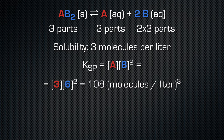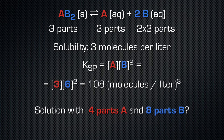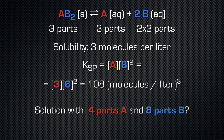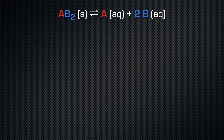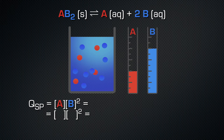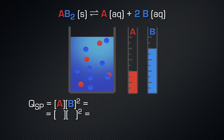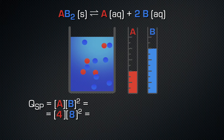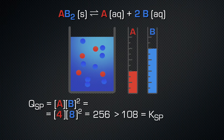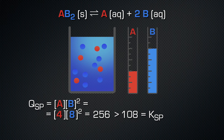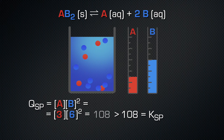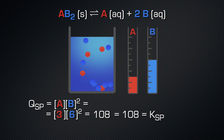The solubility product is 3 × 6² = 108. What happens when we prepare a solution of 4 particles A and 8 particles B? We can calculate the reaction quotient, which has the same formula as the solubility product but does not necessarily indicate an equilibrium state. With 4 particles A and 8 particles B, the reaction quotient is 256 — much higher than the solubility product. The solubility of AB₂ is exceeded, so one particle AB₂ precipitates. We are left with 3 particles A and 6 particles B, and the reaction quotient drops to 108, which is equal to the solubility product.